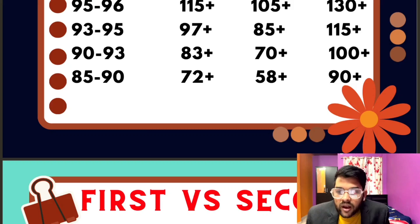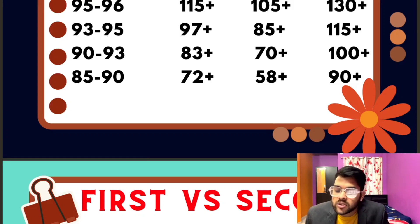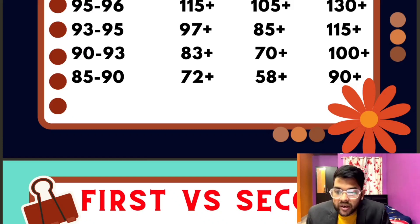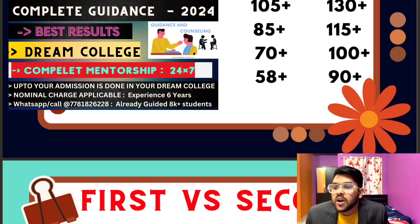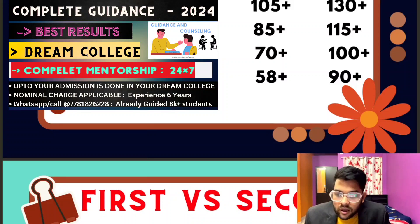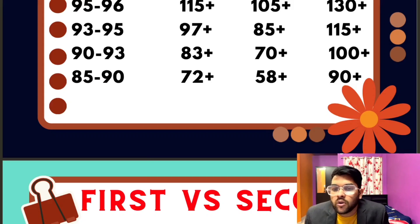Regarding first versus second attempt: if your syllabus is at least 50% complete, try to target the first attempt. Even if you're 30-40% prepared and belong to SC/ST/PwD category, target the first attempt since you get better percentile at fewer marks. If you've only covered 10-20% of the syllabus, focus on boards and treat JEE as a mock test. Don't rush — study everything in detail. One good result is sufficient for college admission.